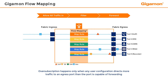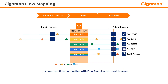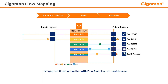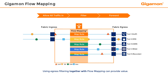Flow mapping overcomes the ingress port filter limitations, but there are times when using egress filtering together with flow mapping can provide value. For example, if all web traffic is forwarded to several web tools, then an egress filter can be used to limit web traffic for one of those tools to a specific IP address, because the users of that tool only care about that web server.